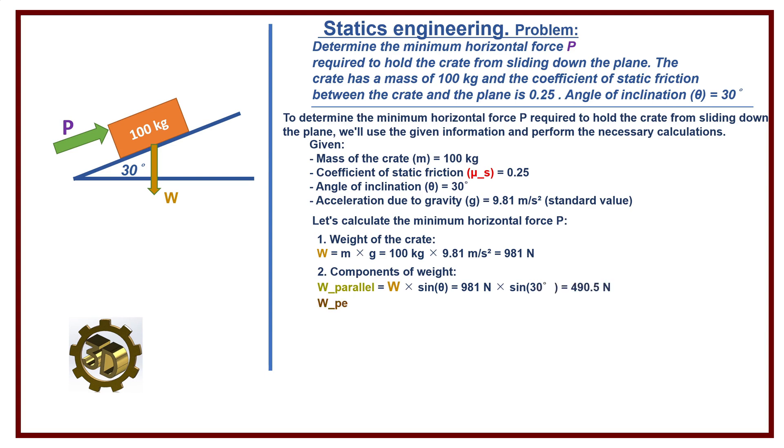W perpendicular equals W times cos theta equals 981 newtons times cos 30 degrees equals 849.5 newtons.